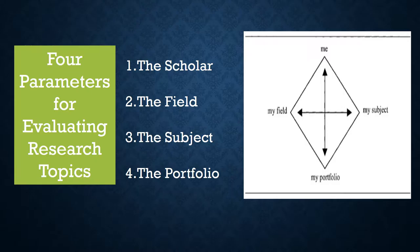There are four parameters for evaluating research topics, and this is what the critical diamond is all about. The critical diamond is an excellent tool for evaluating research topics and finding out exactly what you should write about. The first component is the scholar — before you evaluate any alternative, you have to consider yourself.